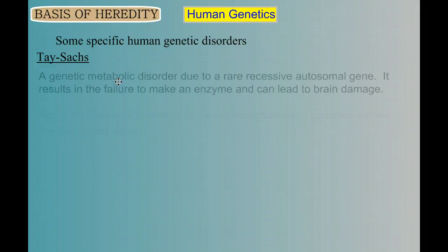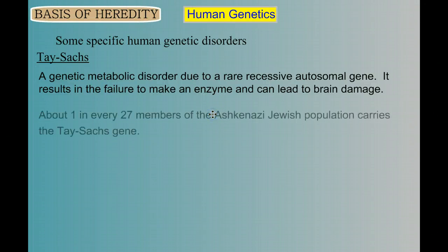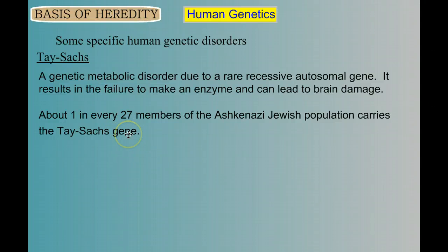Finally, Tay-Sachs disease. Like PKU, Tay-Sachs is a metabolic disorder due to a rare recessive autosomal gene and the failure to make an enzyme, leading to a buildup of toxins in the brain and brain damage. About one in every 27 members of the Ashkenazi Jewish population carries this gene, so in some sections of the population this is a much more common gene.